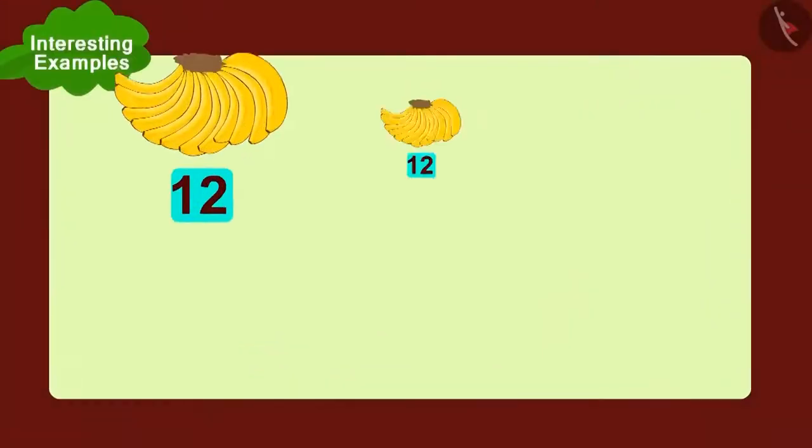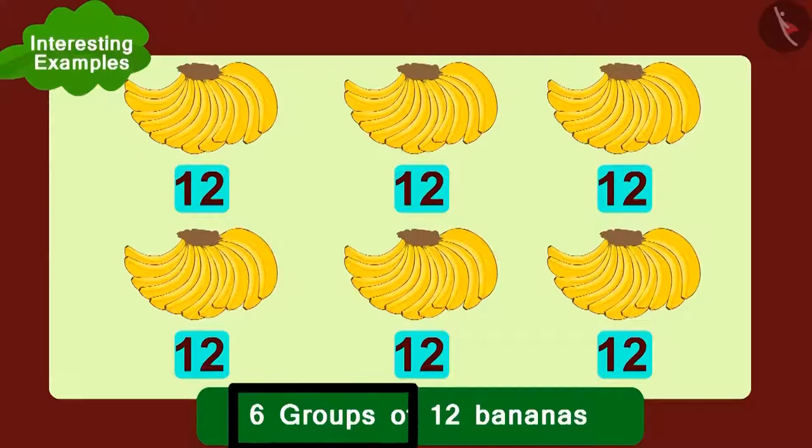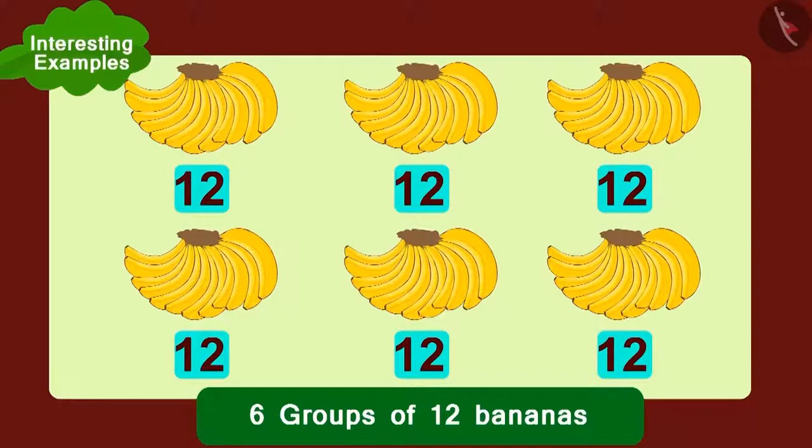Golu had arranged six groups of twelve bananas each in this way. Children, can you write the number of bananas Golu had in the form of multiplication?